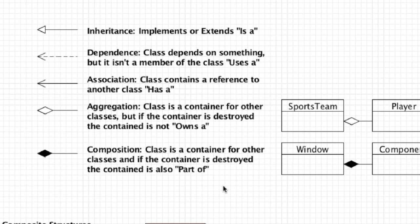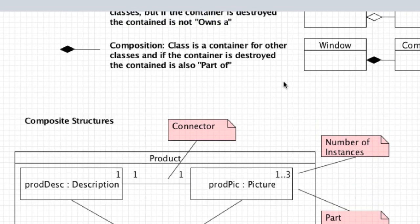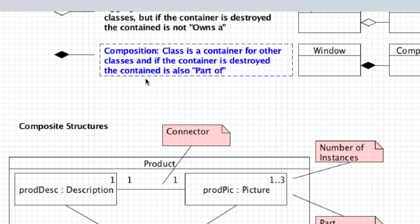Now let's get into composite structures. A composite structure models how objects work together — whenever you find yourself in a situation where a class diagram is not particularly good at showing how different items in a class work together. What we're talking about here is a product as a class, with these pieces being parts of the class, and here we show how these different parts work together. That is when you would use a composite structure. With a composite structure you draw items included through composition inside of the big class — here we have product: description, picture, user guides, and company name.